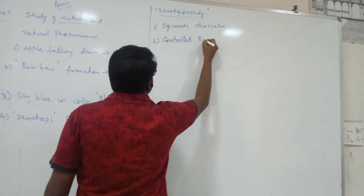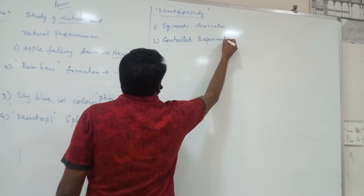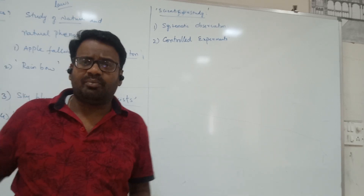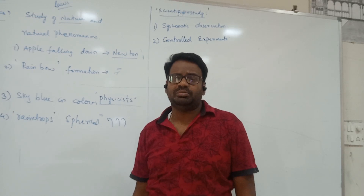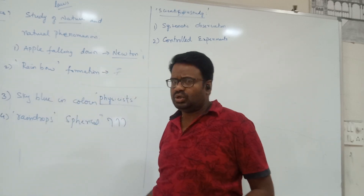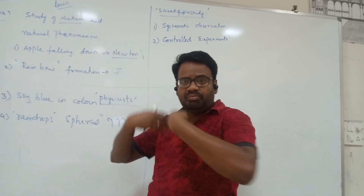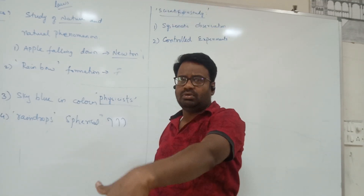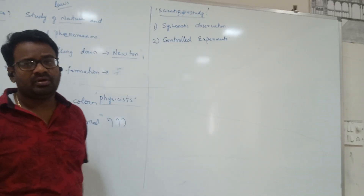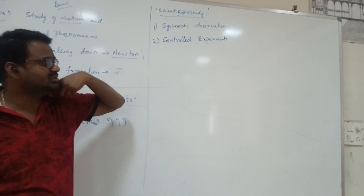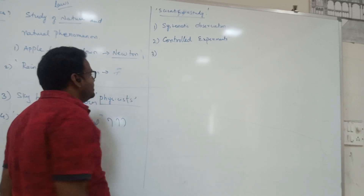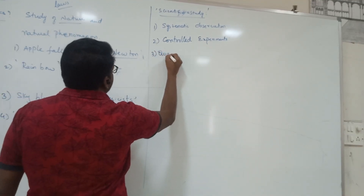The second point is controlled experiments. What is a controlled experiment? Take the example of an apple falling from a tree. Did Newton conclude his law merely from one apple falling? No. He repeated the experiment again and again. After repeating it a number of times, you find you are getting the same results. That is called controlled experiments.